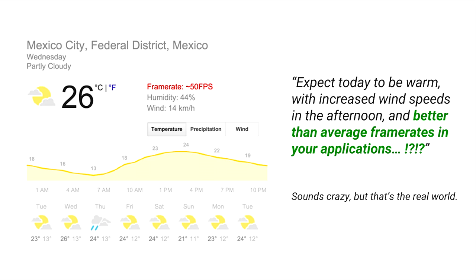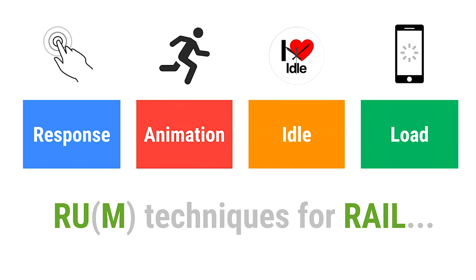So you get slower frame rates on a sunny day — that's kind of crazy, and it's not the kind of thing you would model in DevTools. Maybe at the next Chrome Dev Summit we'll add a new weather emulation mode. This is funny, but it's true — this is the kind of stuff we have to deal with. This is why we need real user measurement to capture real-world data from users, and also APIs to figure out what's going on on the device. What can we gather from real users?